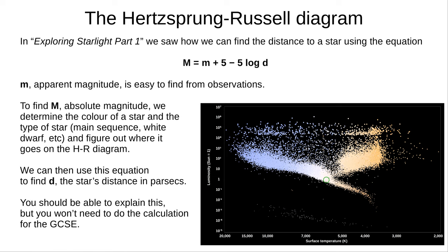First, we find a star's apparent magnitude from simple observations. Next, we need absolute magnitude — find the star's colour and what type it is, and this will give you its location on the HR diagram. We've used luminosity for the y-axis but you can replace this with absolute magnitude. Now we use the equation to find d, the distance in parsecs. This method is approximate — to get a precise measure of a star's absolute magnitude is more complex, and official distances to stars often have a high margin of error. For the GCSE exam, you should be able to explain this method but you won't need to do the calculation.